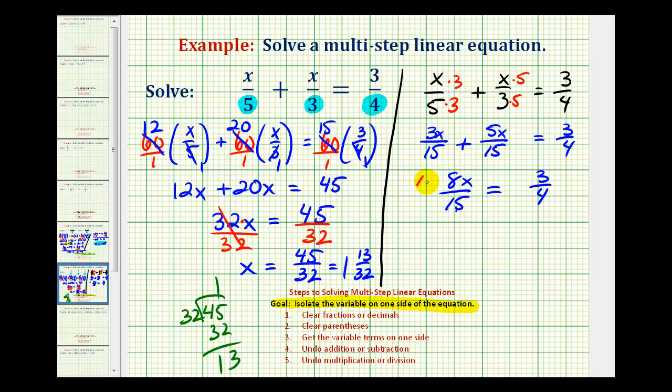So we'd multiply this by fifteen over eight, again the reciprocal of eight-fifteenths. And then the same on this side of the equation. Notice how the fifteenths simplify to one, as well as the eighths. So we are left with just x.